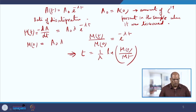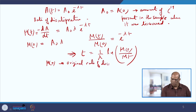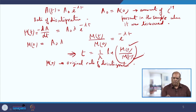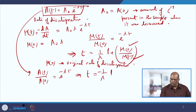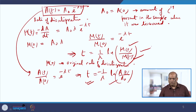Here m₀ is the original rate of disintegration at time t = 0, and t gives the age of the sample — provided you can measure both m₀ and m(t). Similarly, from A(t)/A₀ = e^(−λt), you can also calculate t = −(1/λ) ln(A(t)/A₀). You can calculate the approximate age using whichever information is available.